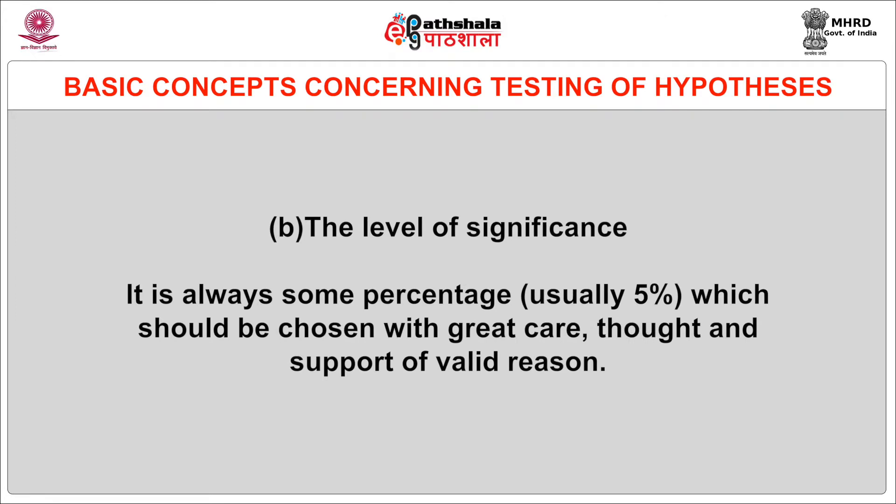The second important concept under hypothesis testing is the level of significance. It is always some percentage, usually 5 percent, which should be chosen with great care, thought, and support of valid reason. If a significance level of 5 percent is taken, then this implies the null hypothesis will be rejected when the sampling result has a less than 5 percent probability of occurring if the null hypothesis is taken as true. In other words, the 5 percent level of significance means that the researcher is willing to take a 5 percent risk of rejecting the null hypothesis when it happens to be true. Thus, the significance level becomes the maximum value of the probability of rejecting the null hypothesis when it is true and is usually determined in advance before testing the hypothesis.